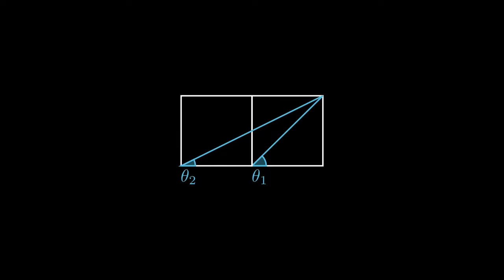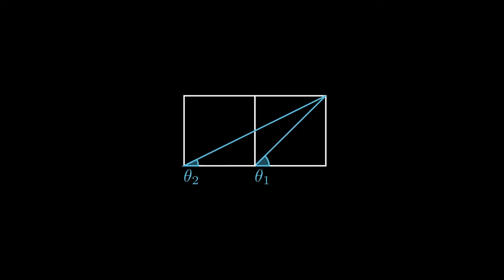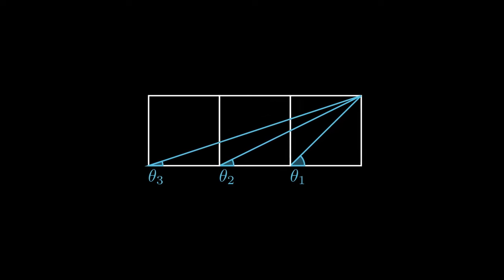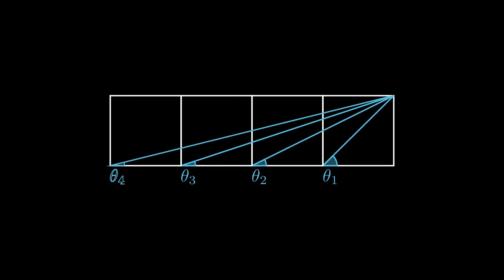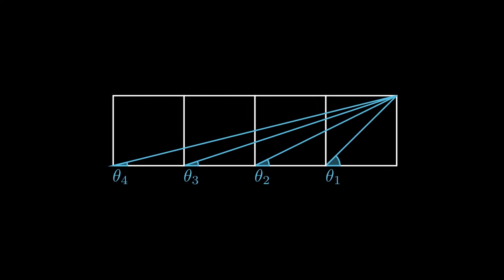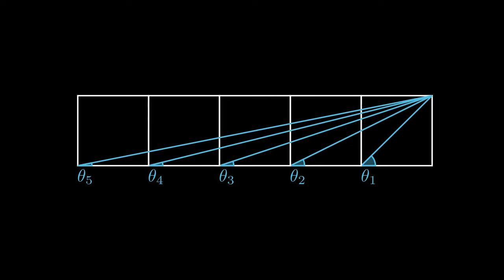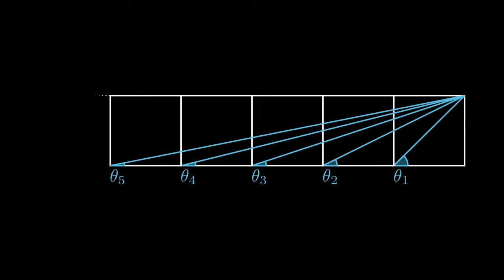Draw a third square and call this angle theta 3. Continue this pattern to draw theta 4, theta 5, and so on and so forth.